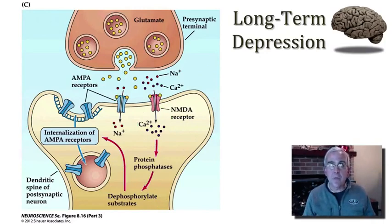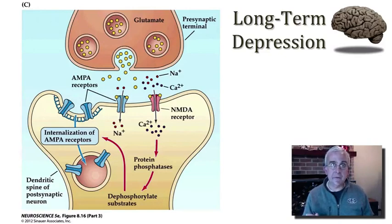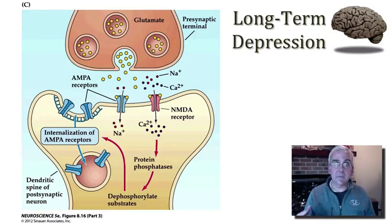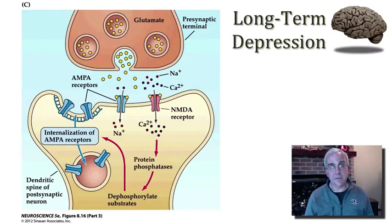Both long-term potentiation and long-term depression require activity, and both require activation of AMPA receptors and NMDA receptors. The key difference is the level of post-synaptic calcium and the rate of its rise. When calcium rushes into the post-synaptic membrane rapidly, one anticipates activation of kinases and insertion of new AMPA receptors, leading to potentiation. But if the rise of calcium is slow and to a much lesser level, we expect activation of protein phosphatases and internalization of AMPA receptors, thereby depressing the strength of that synaptic connection.